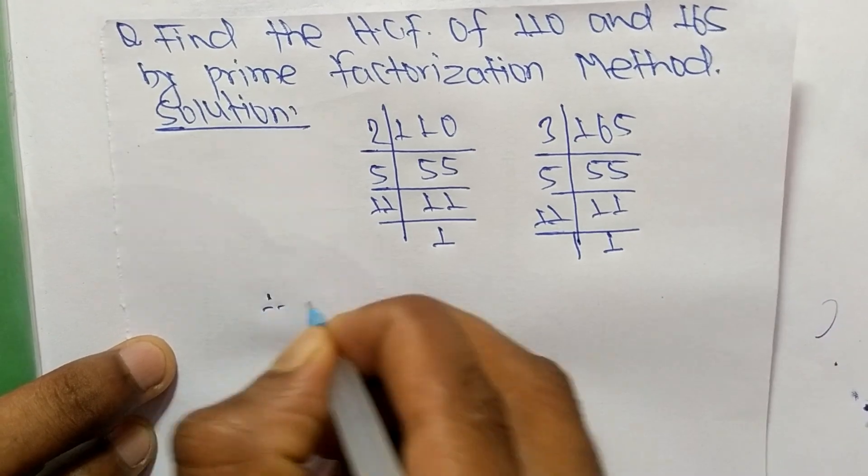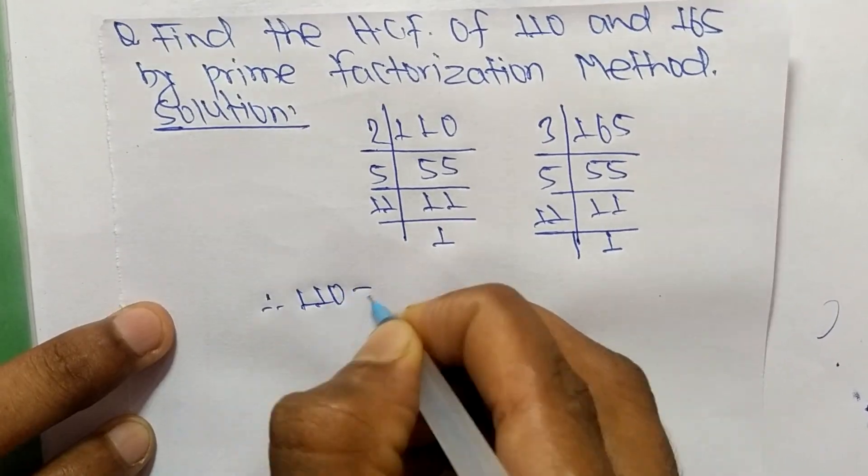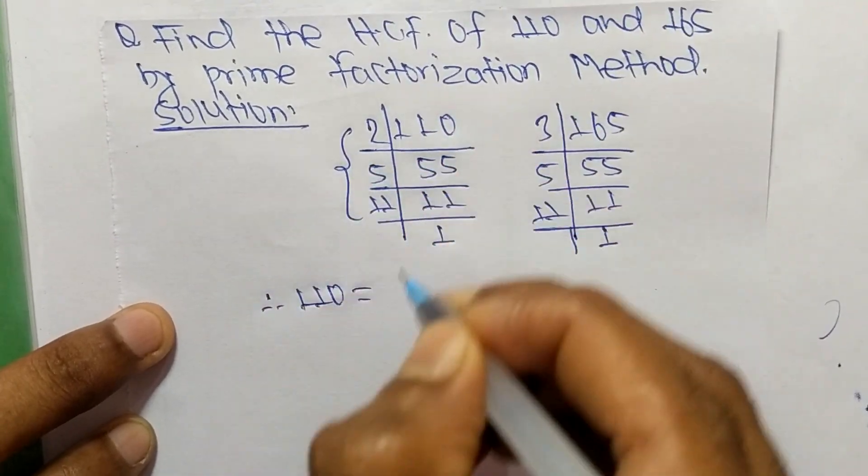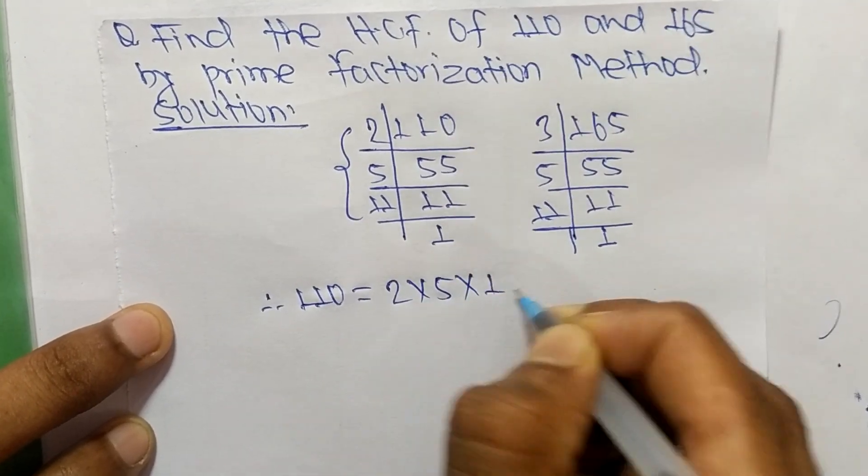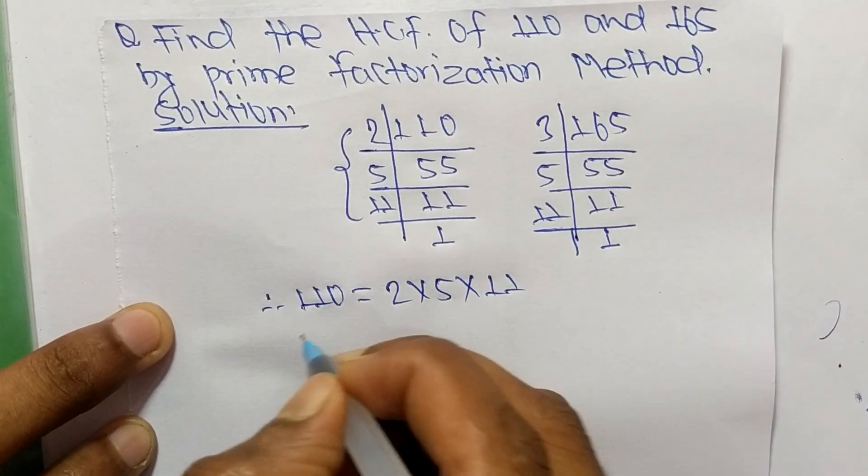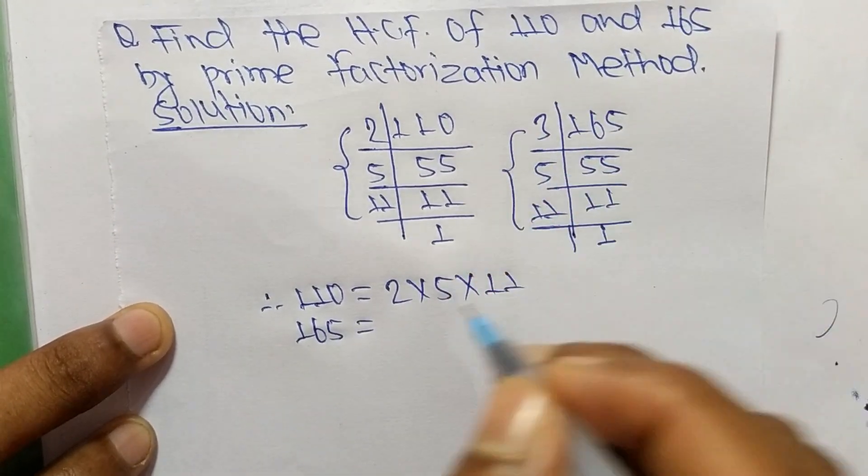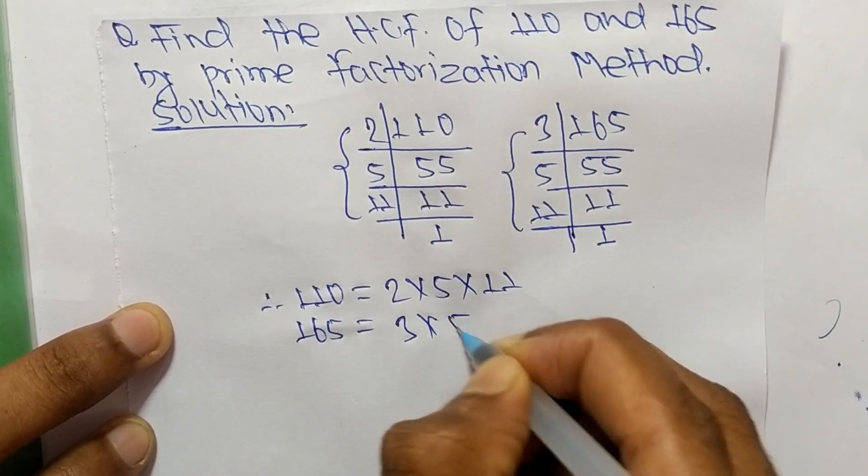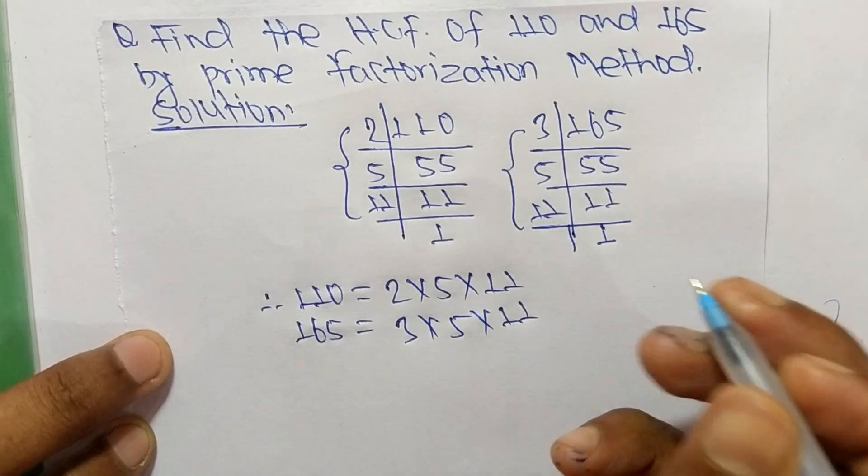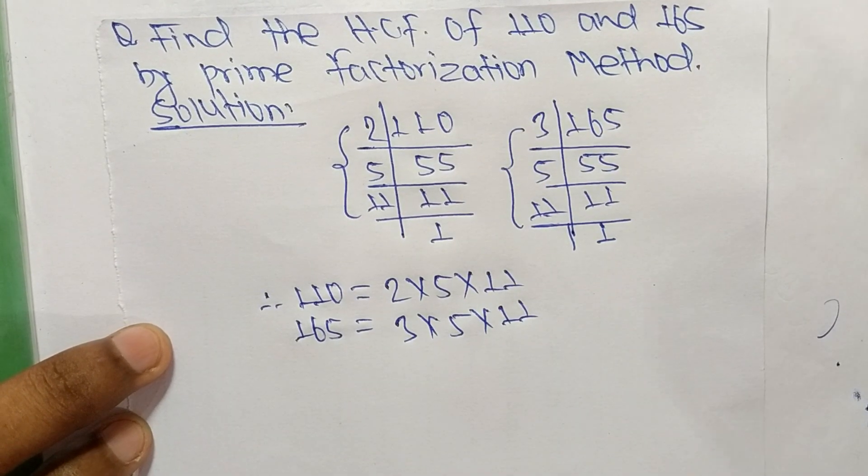From these prime factors, we can write 110 equals 2 times 5 times 11, and 165 equals 3 times 5 times 11. Now we select the common factors in this prime factorization.